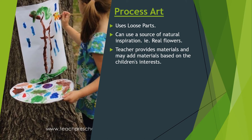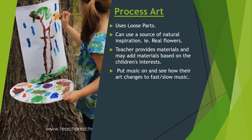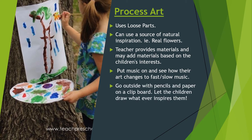With process art, teachers provide materials and may add materials based on the children's interests. Another example is to put music on and see how the children's art changes to fast or slow music. We can also go outside with pencils and paper on a clipboard and let the children draw whatever inspires them. As you can see in this picture, the child is using the tree as her easel and also as her inspiration.